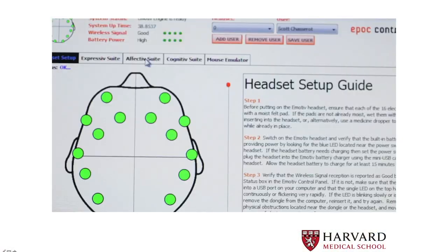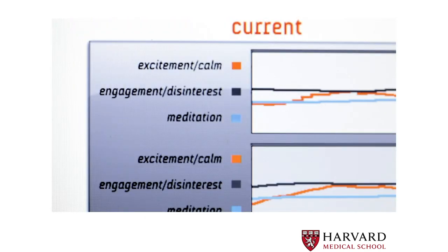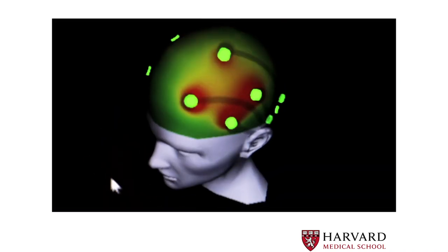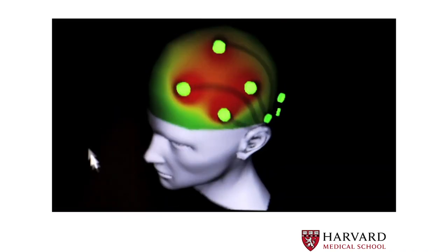This is the EEG device — a 14-channel device that works by Bluetooth and gives you an output showing different emotional responses at a given time. It also shows which areas of the brain are lighting up at what time and where the activity is.